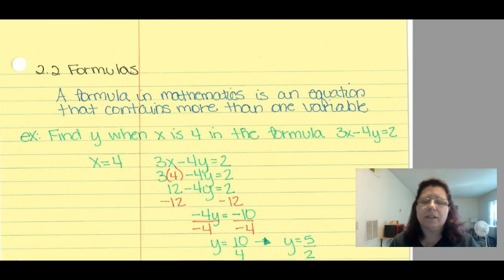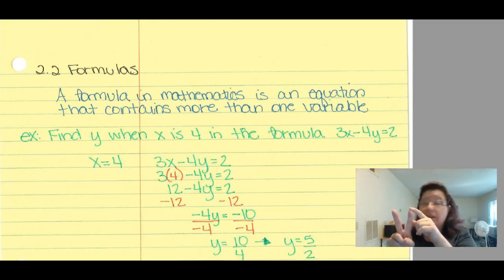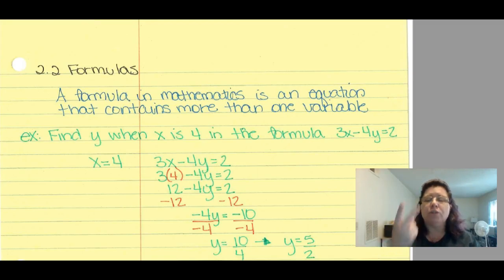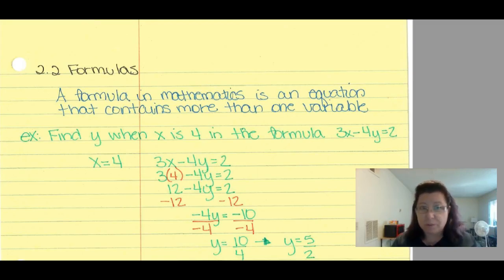With formulas, we find one variable given information about the other. If I have an equation with two variables, I need either the value of one variable so I can solve for the second, or I must be given one variable in terms of the other. For example, if x + y = 4 and x = 2y, I substitute and solve for y. As long as I can get down to one variable, I can solve for both.